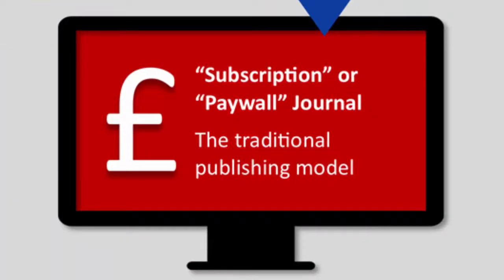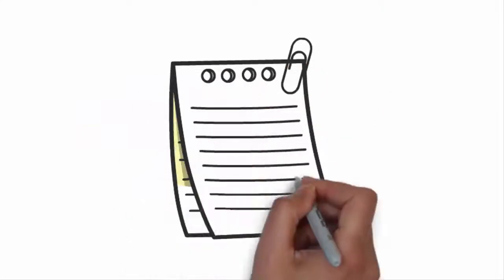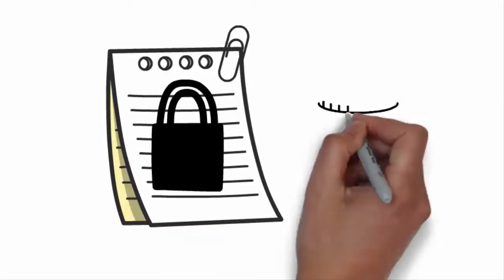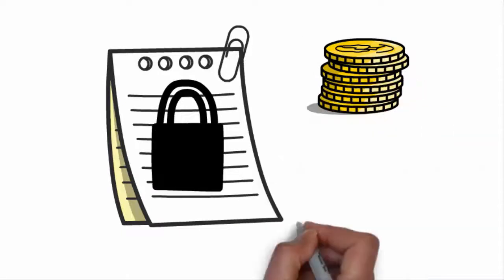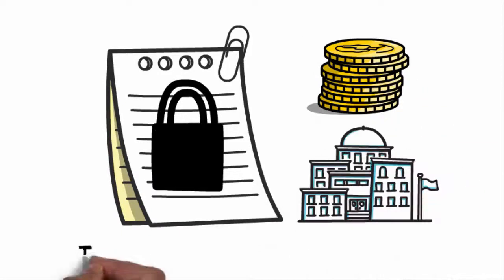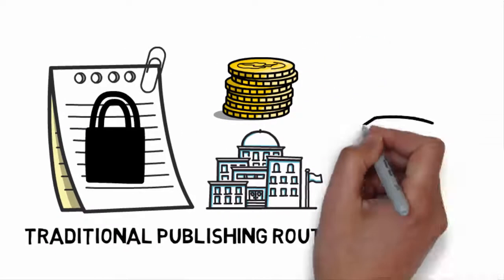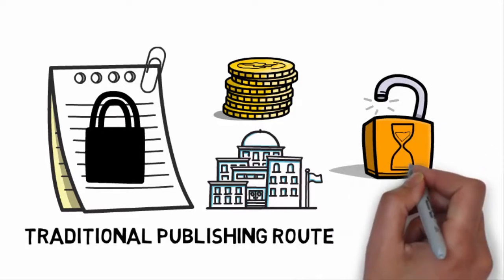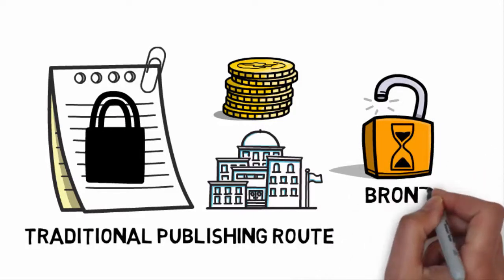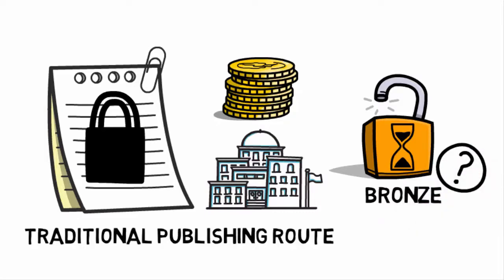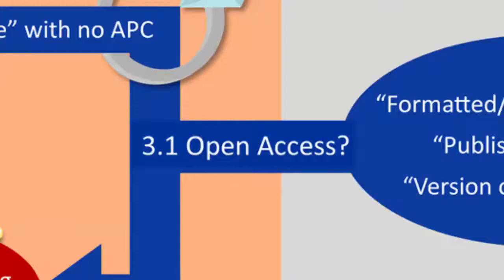If you are publishing in a subscription journal, this version will then be behind a paywall. This means individuals will either need to pay to read the article or will need to be affiliated with an institution that has a subscription to the journal. This is known as the traditional publishing route. Under this model, in some cases publishers make the paper freely available for a restricted period of time — sometimes known as bronze open access — though this does not reflect the true nature of open access publishing.